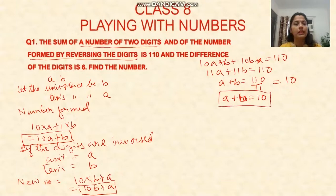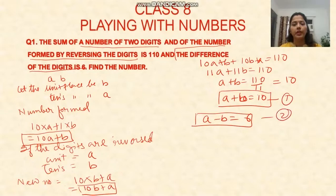So a plus b is 10. Now look at the next condition: the difference of the digits is 6. That means a minus b is 6. This is one equation, and that is another equation.